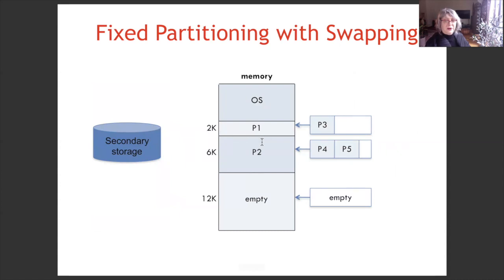Only process information is stored in the queue. For P2, the process itself is in secondary storage. Only P1 is in main memory for the small size processes. For the medium partition, P2 is in main memory, and P4 and P5 information is in the queue; however, their code is in secondary storage.